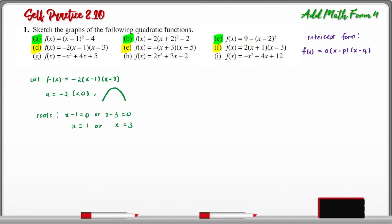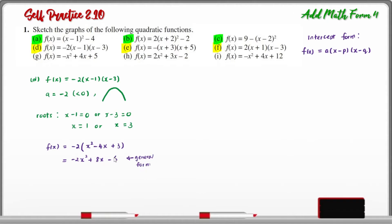Next, I'm going to expand the intercept form. Expanding the bracket gives x² - 4x + 3. Multiplying by -2 gives the general form: -2x² + 8x - 6. Therefore, the y-intercept, which is the constant C, is -6.